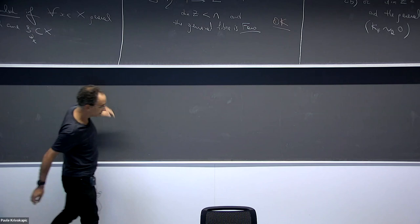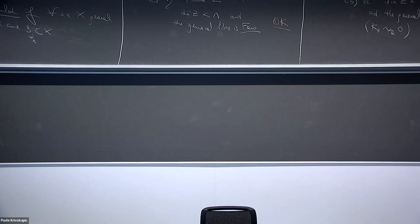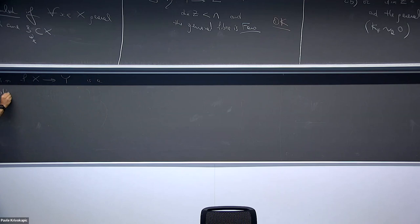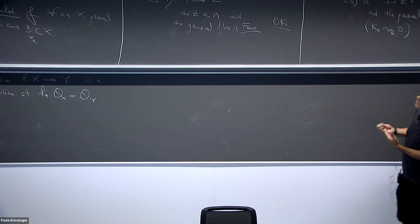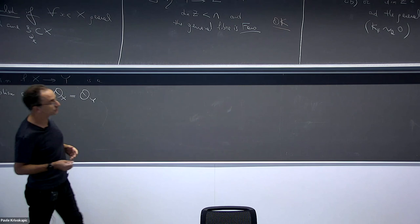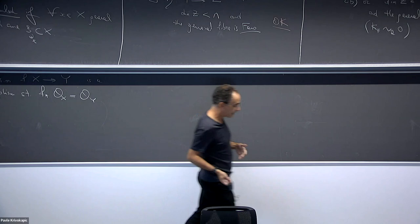We want to study some kind of MMP for fibrations. For me, a fibration is a morphism from X to Y — from a normal variety to a normal variety — with connected fibers and surjective. In Mori-style language, the pushforward of the structure sheaf of X equals the structure sheaf of Y. The problem is that as soon as you change the model via birational map, you lose the fibration.